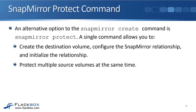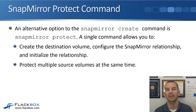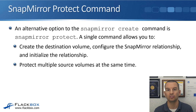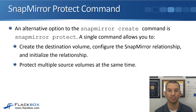So when we break the commands down there are three separate commands: a command for creating the volume, a command for creating the mirror relationship, and then a command for doing the initial baseline transfer. You can also do the whole thing with the SnapMirror protect command. I wanted to show you the breakdown first so that when you do use the SnapMirror protect command you understand what's going on behind the scenes, because it's going to do the same configuration for you but just with one command. It will create the destination volume, configure the SnapMirror relationship, and initialize the relationship all in one command.